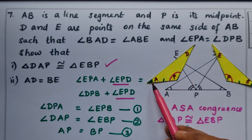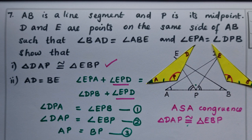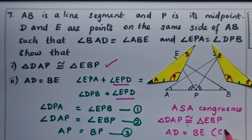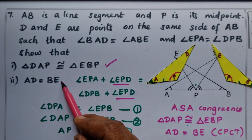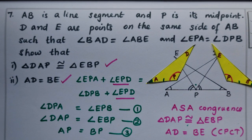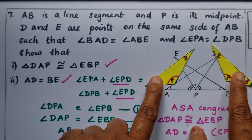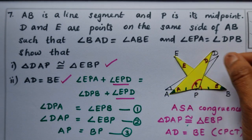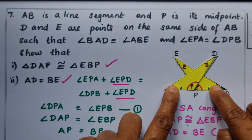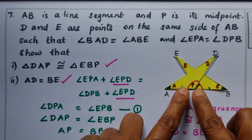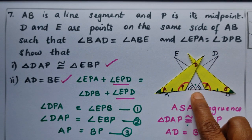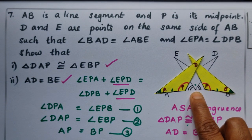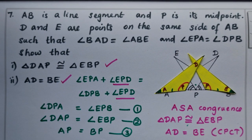For part two, AD equals BE. Because the triangles are congruent, corresponding parts of congruent triangles are equal — CPCT. Therefore AD equals BE. We have proved both parts using the paper cuttings and the two congruent triangles with equal angles and equal midpoint sides. Thank you.